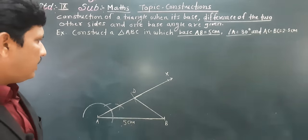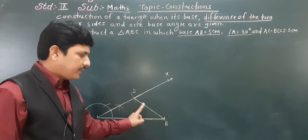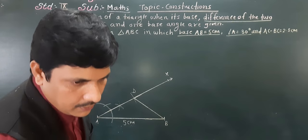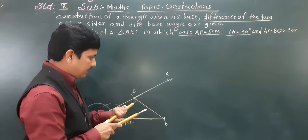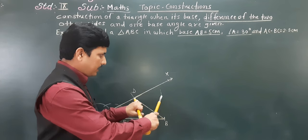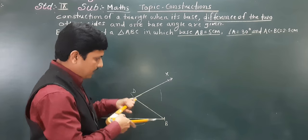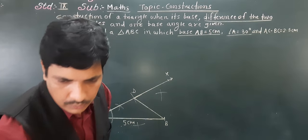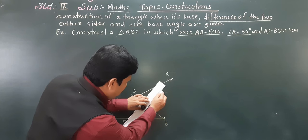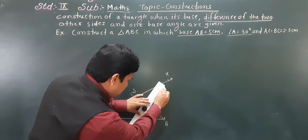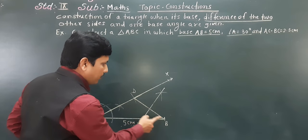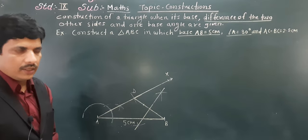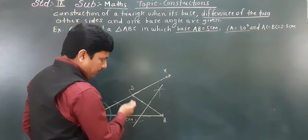After this, we are going to bisect segment DB. To bisect DB, take more than half the distance with D as center and make arcs on both sides. From B, with the same radius, do the same. Join the two intersection points to get the bisector of DB — so this bisector divides DB into two equal parts.